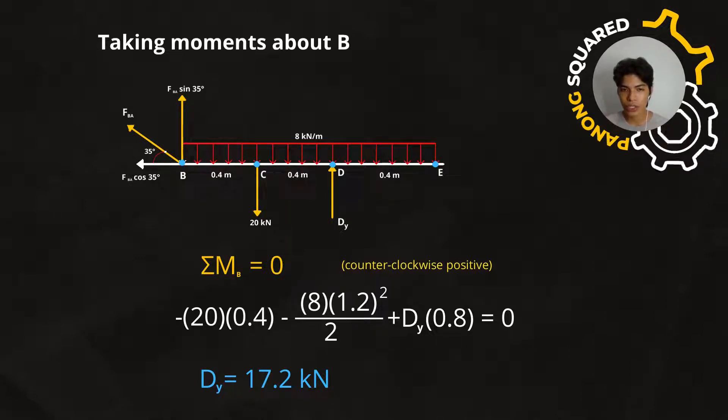And then add the Dy multiplied by 0.8 meters, that's the total distance from B to D, and then equal to 0. So, by simplifying the equation, we can get the value of Dy is equal to 17.2 kilonewtons.